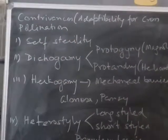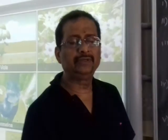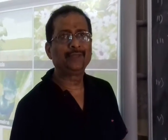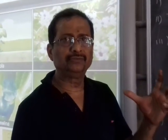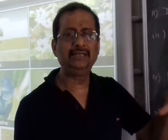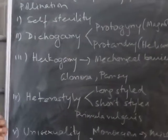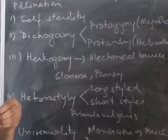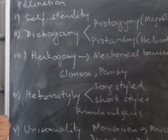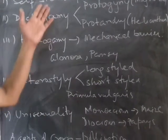Nature always favors cross-pollination, which yields better quality fruit and seeds with a higher survival rate. The adaptations in plants that promote cross-pollination are called contrivances of cross-pollination. One such contrivance is self-sterility — when pollen from the same flower drops on the stigma, it causes a wrong pollen-pistil interaction and fertilization does not occur.